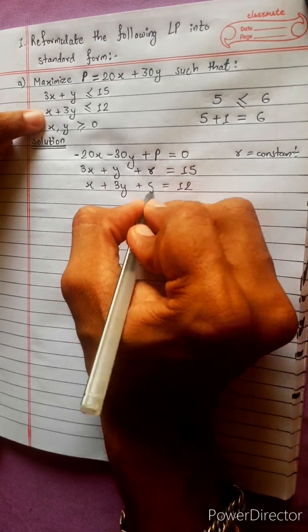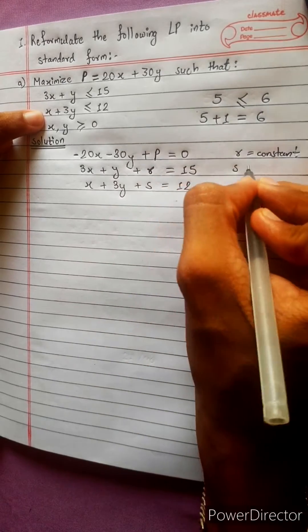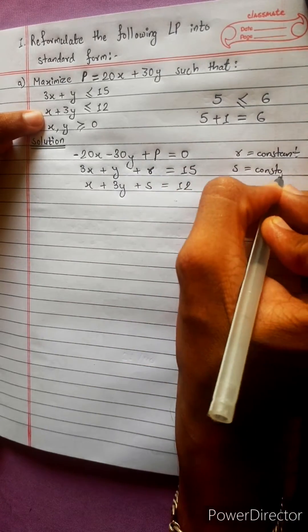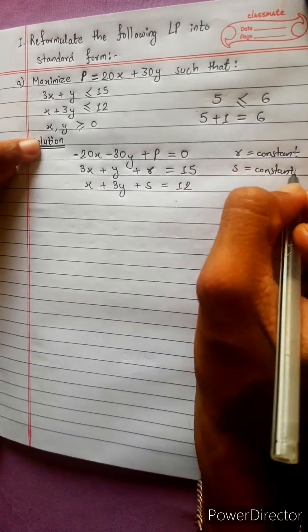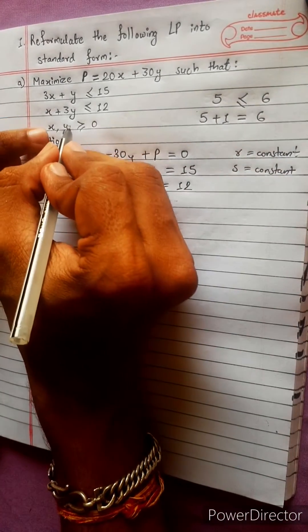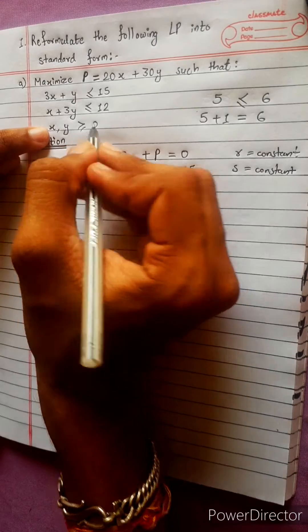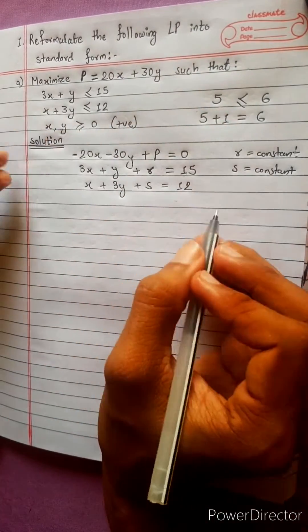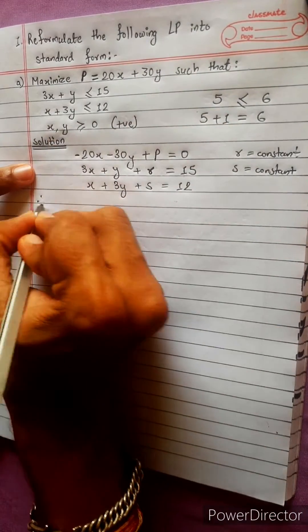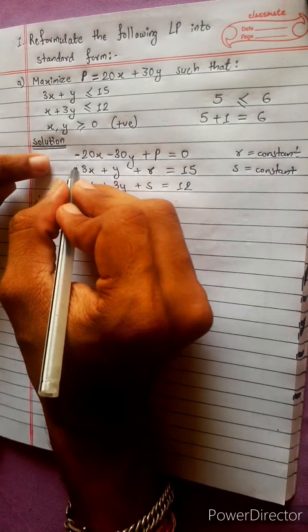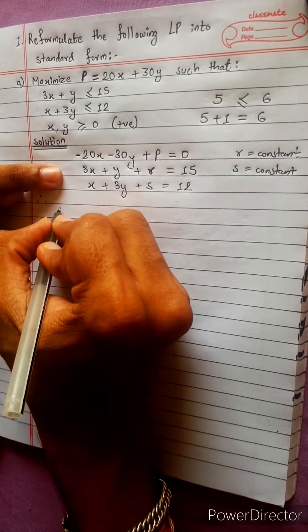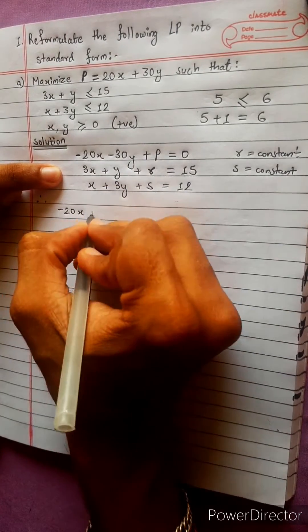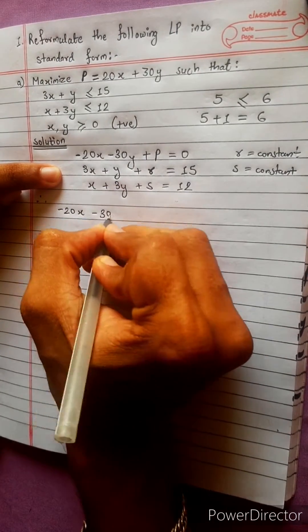PQRS: s equals to constant. This is x greater than or equal to 0, which is a positive number. Therefore, the answer is minus 20x minus 30y.